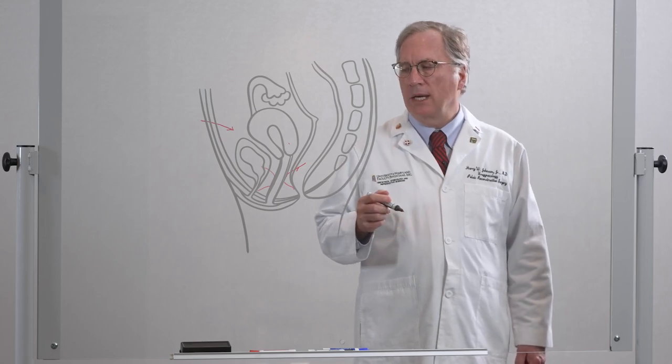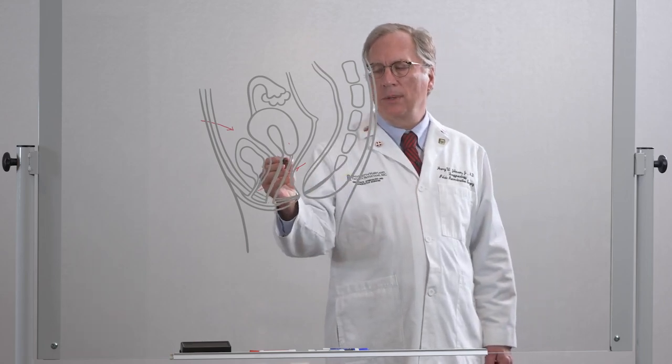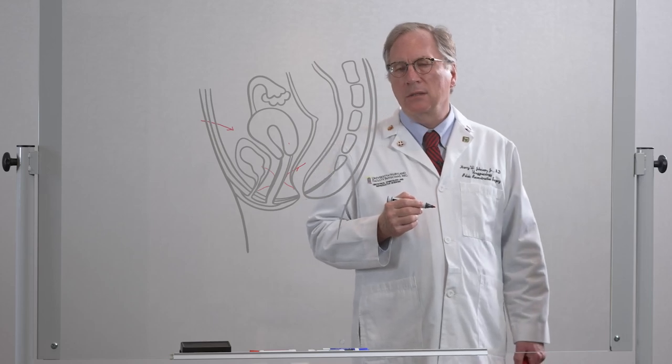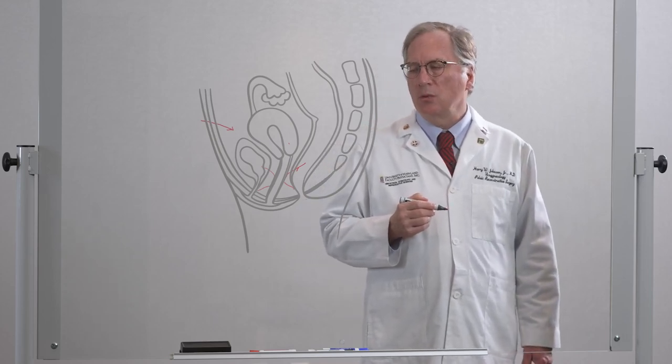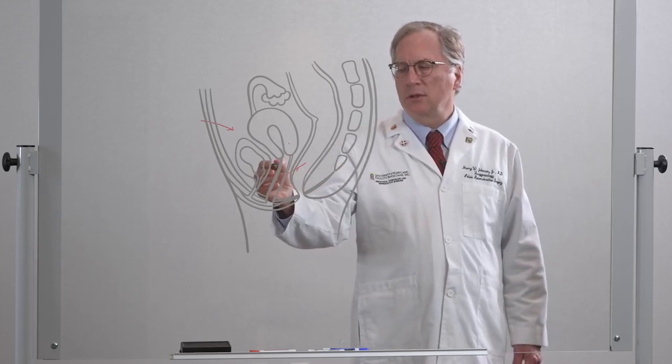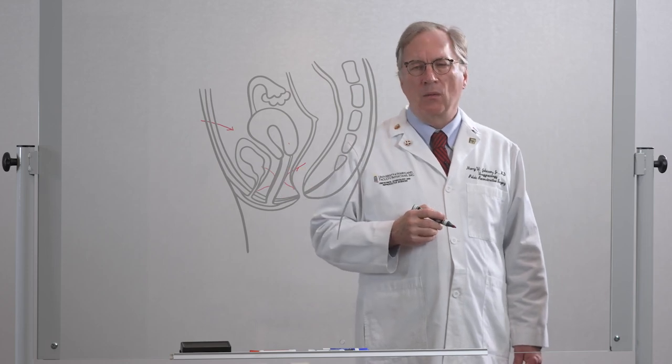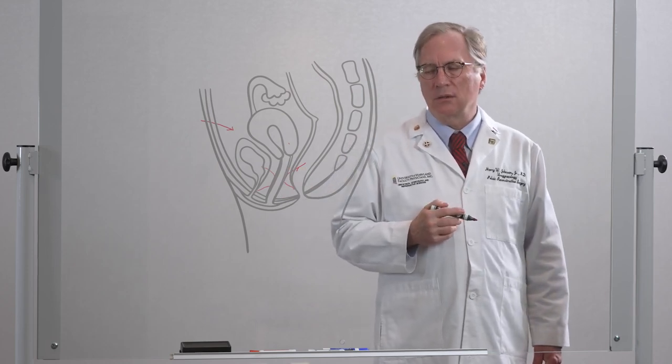There are two types of repairs that are done. One is native tissue repair where we actually take the tissues of the vagina and the supports of the vagina to re-support the rectum and the bladder. In some cases where the supports are damaged, we'll use a mesh which re-supports the vagina, the bladder, and the rectum to ensure the greatest success.